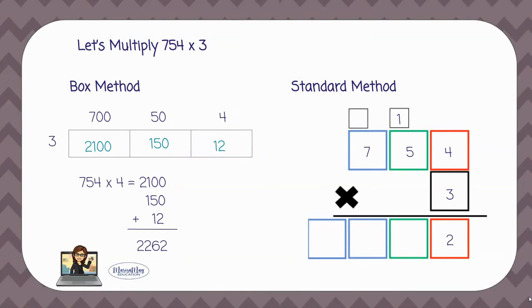Next, I'm going to multiply the black box times the green box. 3 times 5 gives me 15. But before I write that down, I have to carry my 1 at the top. So 3 times 5 is 15. Add my carried 1 makes 16.